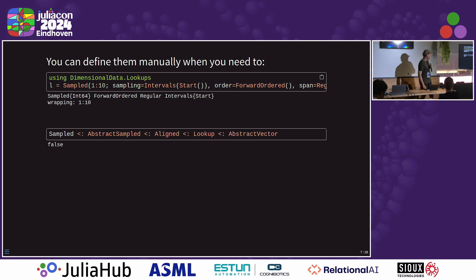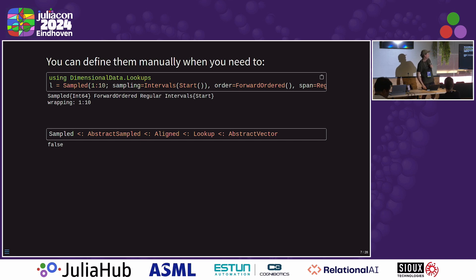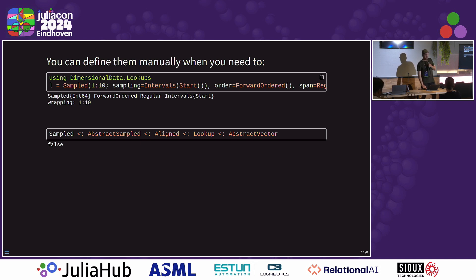You can define them manually when you need. Here's a sampled lookup, the most common one — it's an abstract sampled lookup. So there's quite a family of different kinds of lookups. We have lookups that can take X and Y dimensions into account, so we can do rotated and skewed lookups. But mostly you're just dealing with sampled in everyday data.